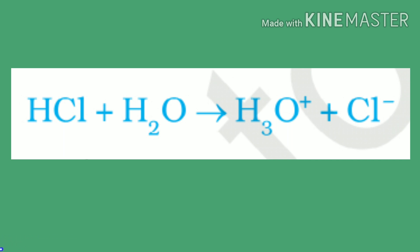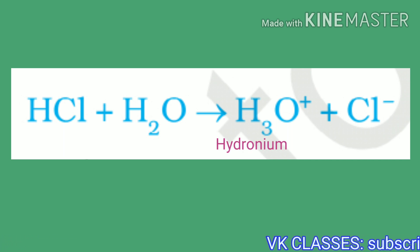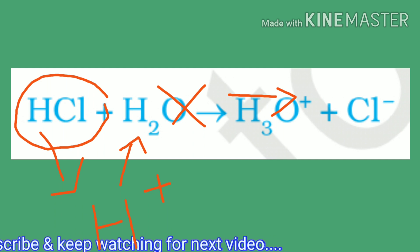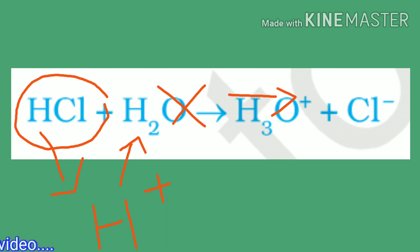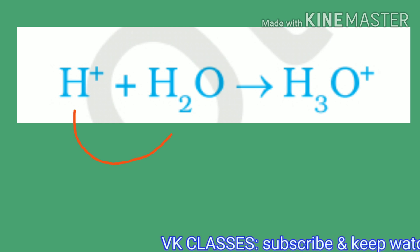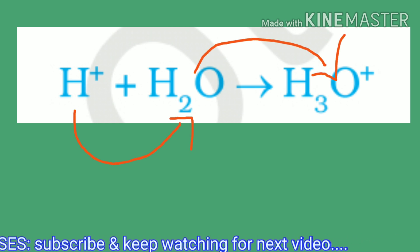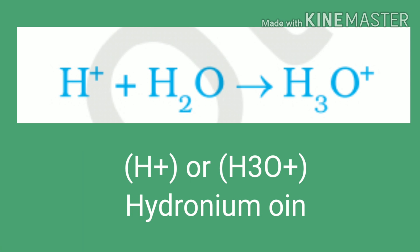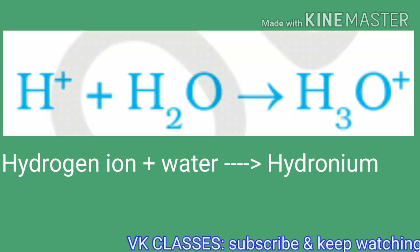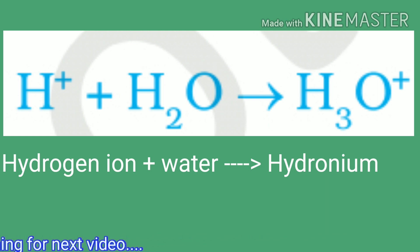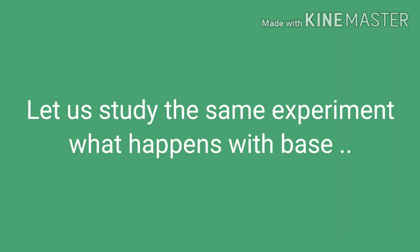This experiment suggests that hydrogen ions in HCl are produced only in the presence of water. HCl reacts with water to give hydronium ion (H₃O⁺) plus chloride ion (Cl⁻). The separation of H⁺ ions from HCl molecules cannot occur without water. This confirms that hydrogen ions cannot exist alone — they must combine with water molecules. Thus, hydrogen ions must always be shown as H⁺ or hydronium ion H₃O⁺.